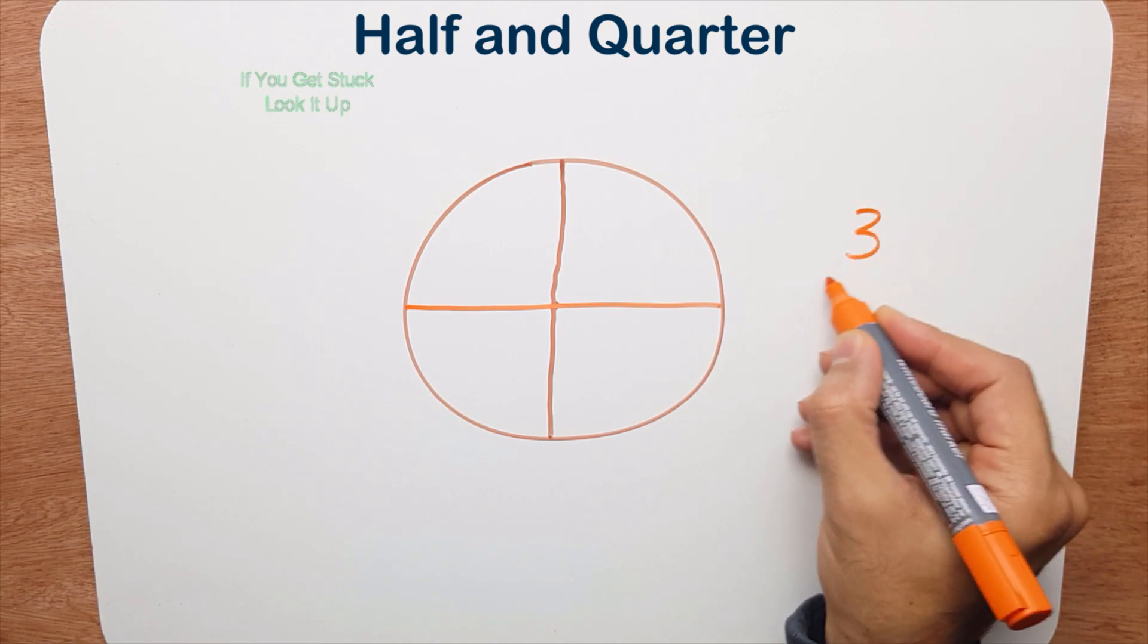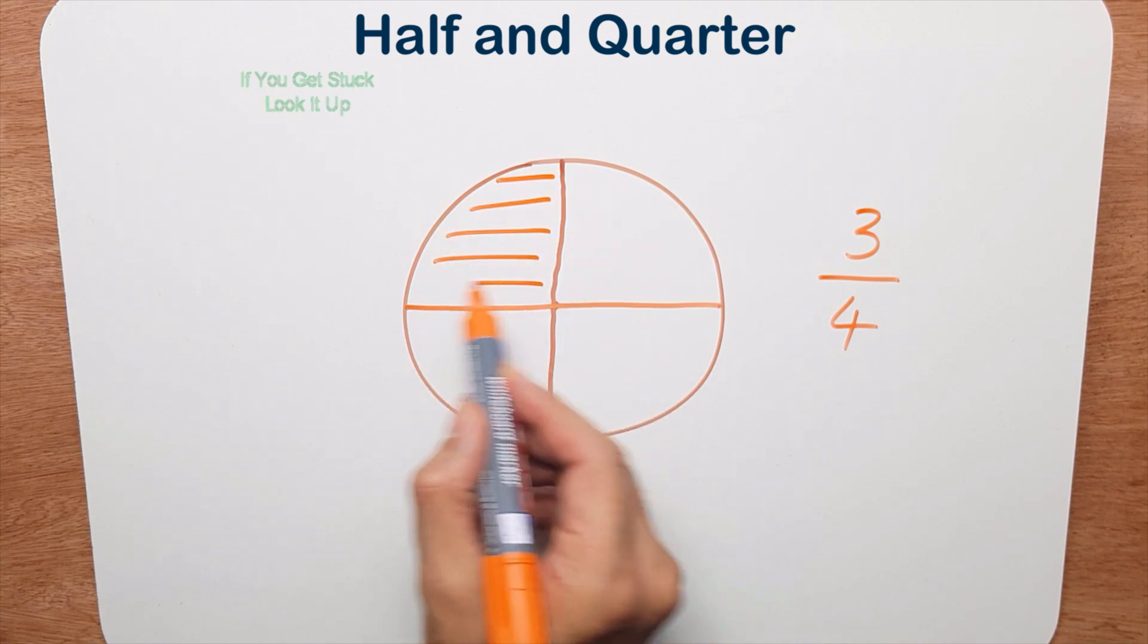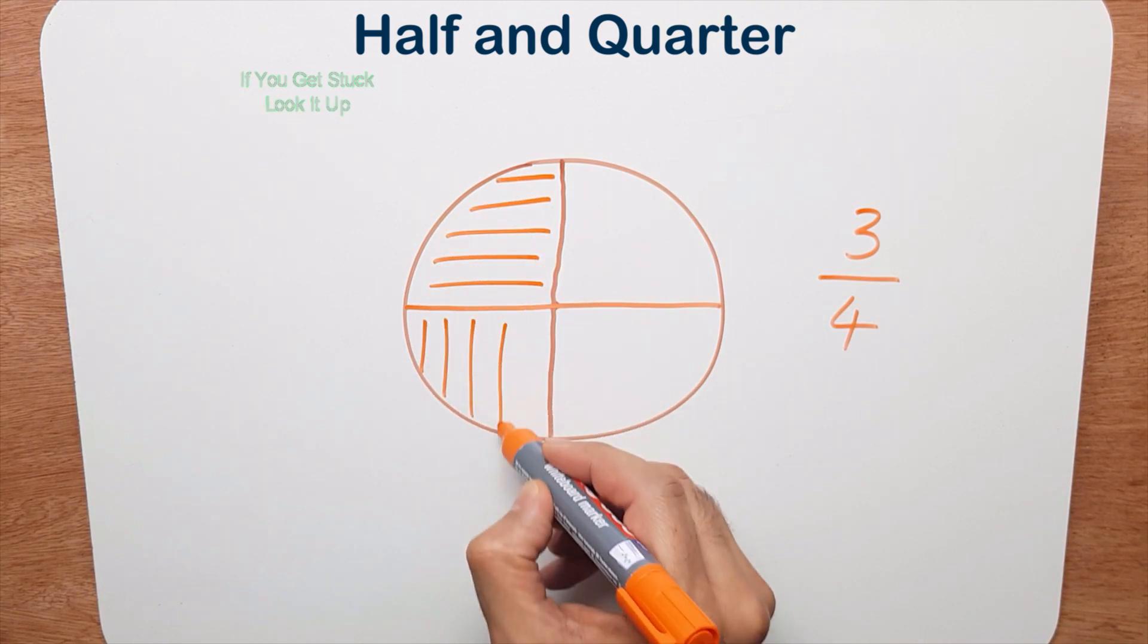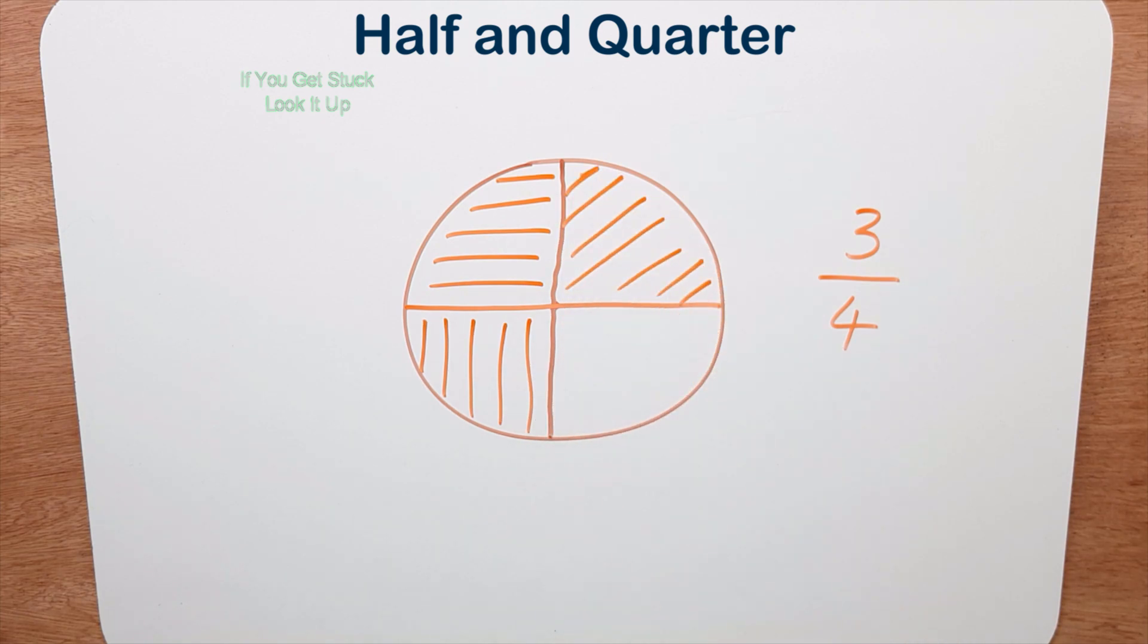Now if I want to shade in three quarters, I've cut the pizza into four pieces. So I can shade in one, two, and three. So I've shaded in three quarters of this pizza.